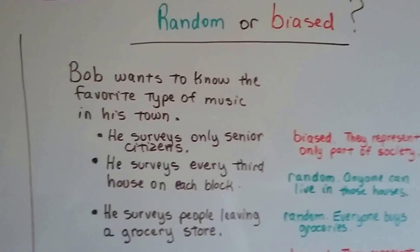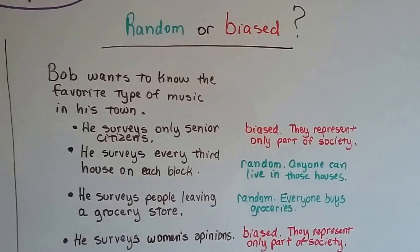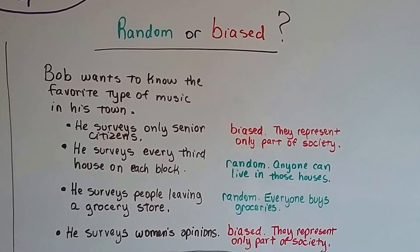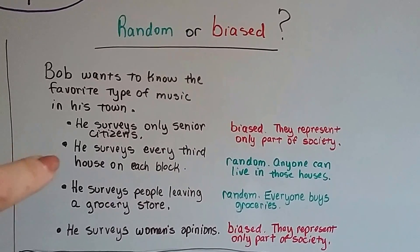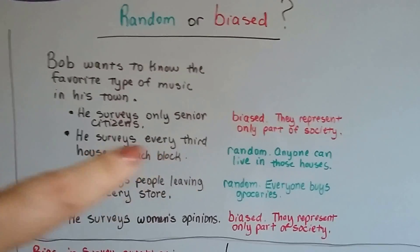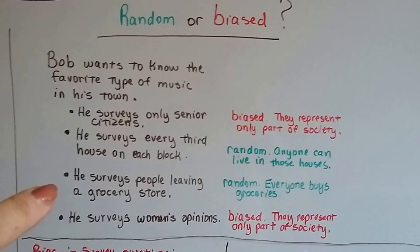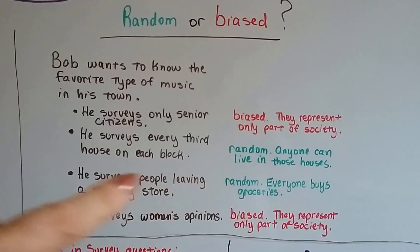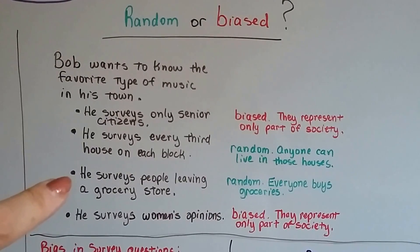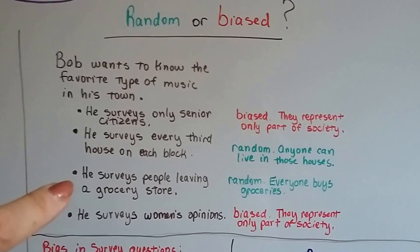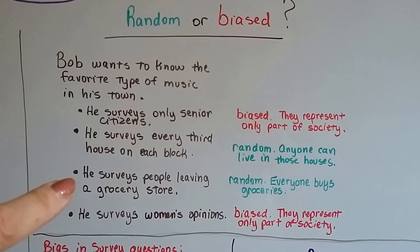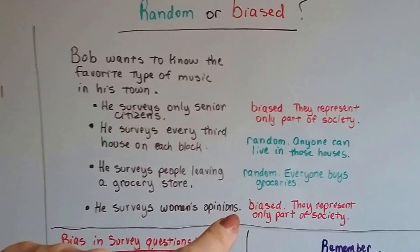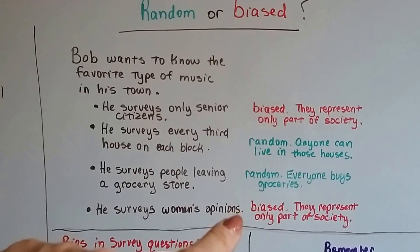Well, that would be biased because they only represent a part of society. What if he surveys every third house on each block? Well, that would be random because anyone could live in those houses. What if he surveys people leaving a grocery store? Well, that would be random too, because everyone buys groceries — unless it's a certain type of grocery store in a certain part of town where only certain people shop. Then it would be biased. What about if he only surveys women's opinions? Well, that would be biased too because they only represent part of society.